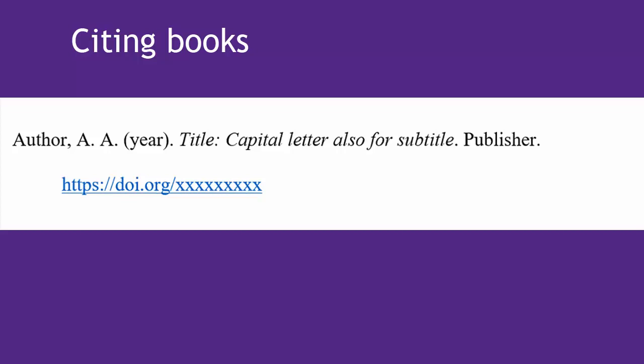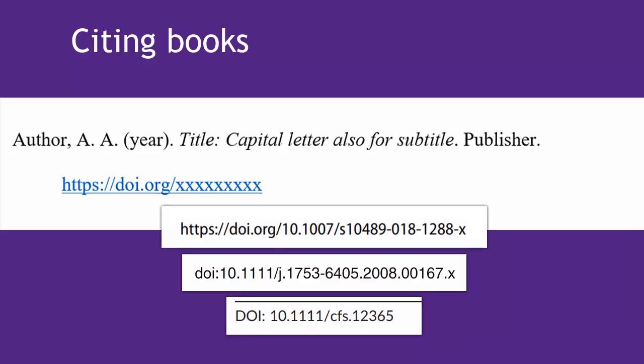DOI stands for Digital Object Identifier and it's very important for citing lots of things in APA. It's a long string of numbers and letters that is unique to only this one work. Here are a few examples of what DOIs in books might look like. You'll sometimes see them in newer print books, but they're most common in ebooks.